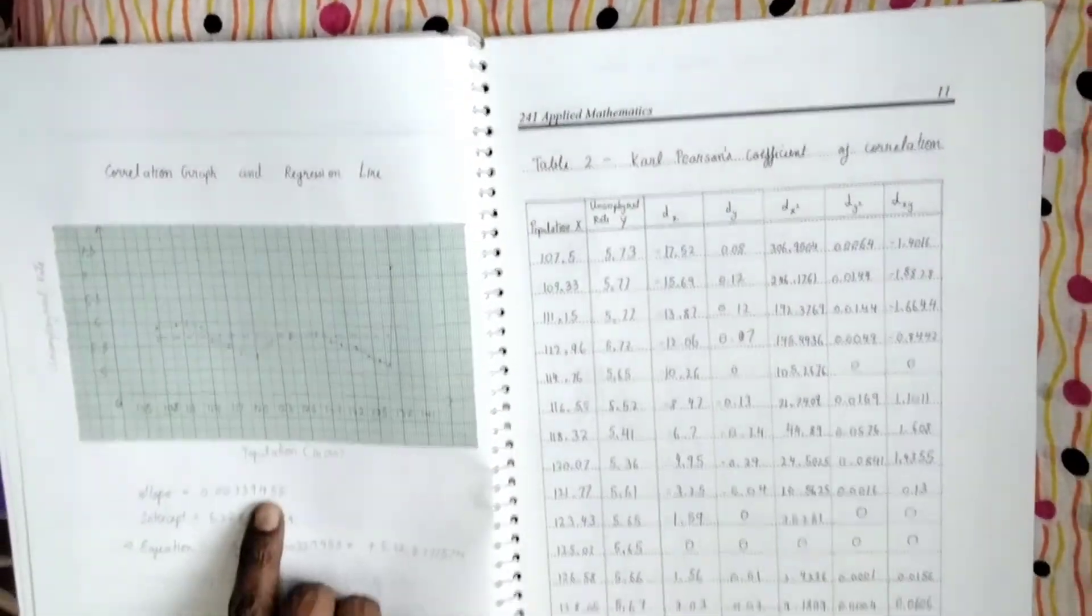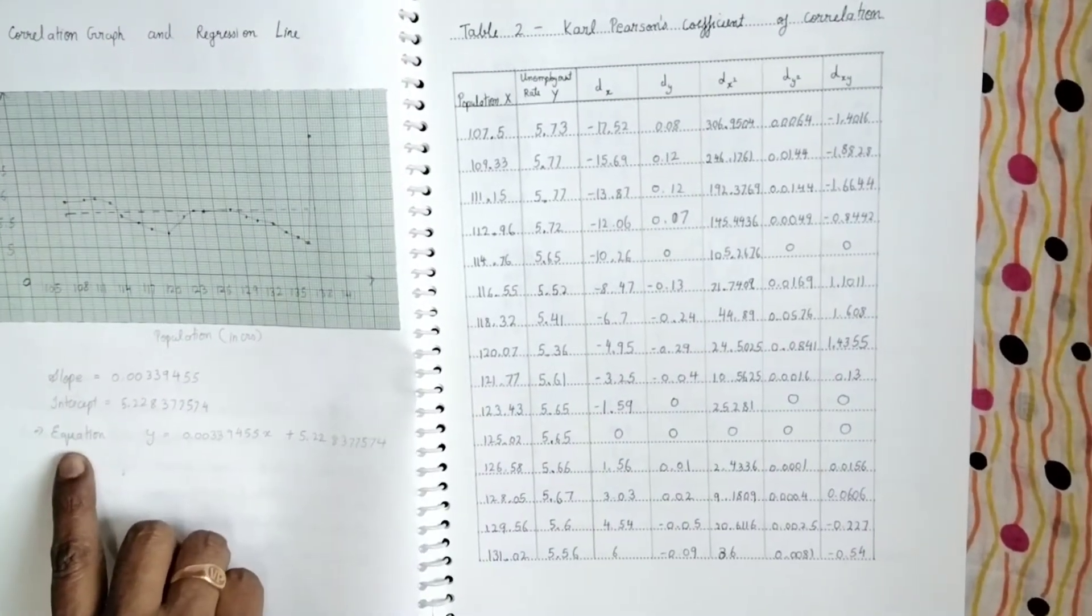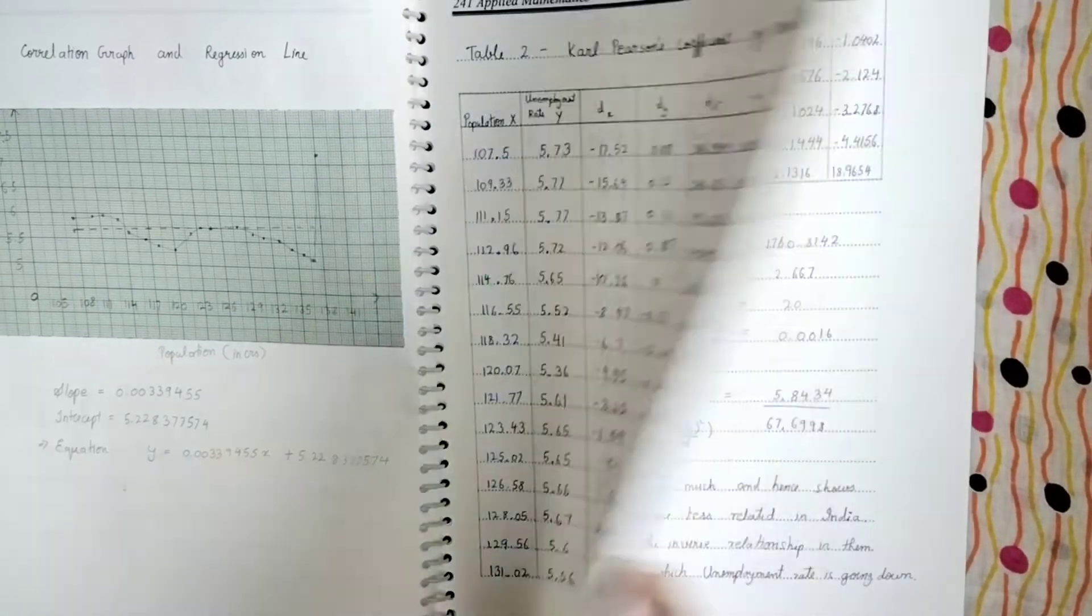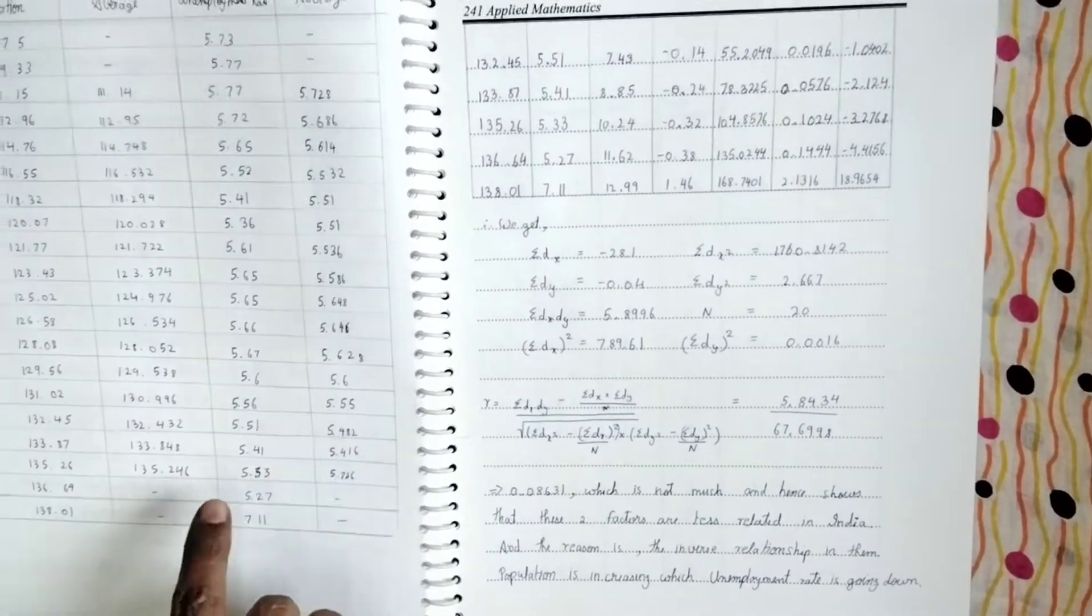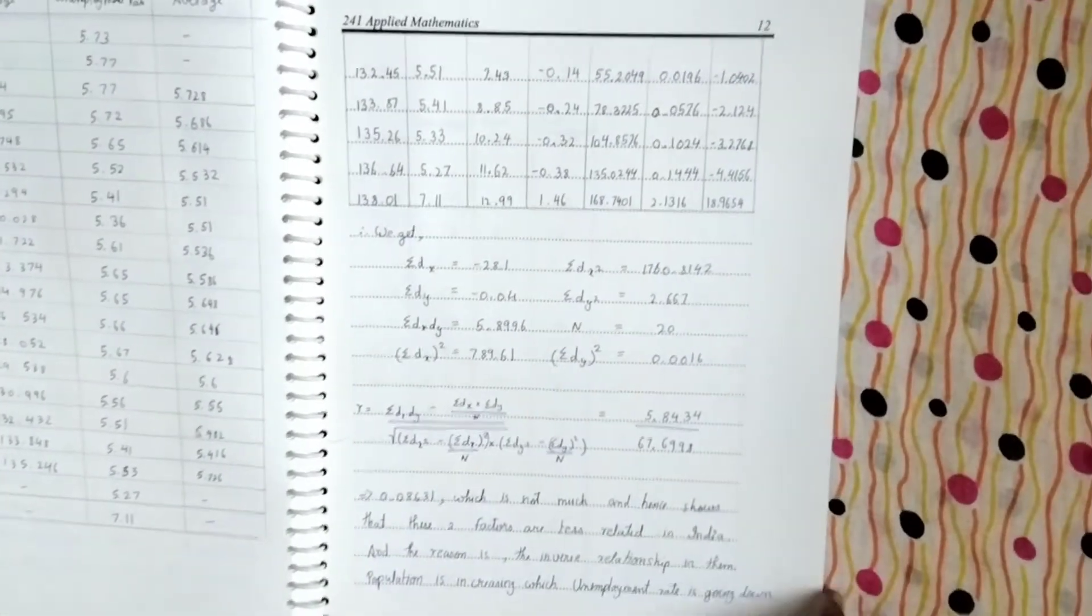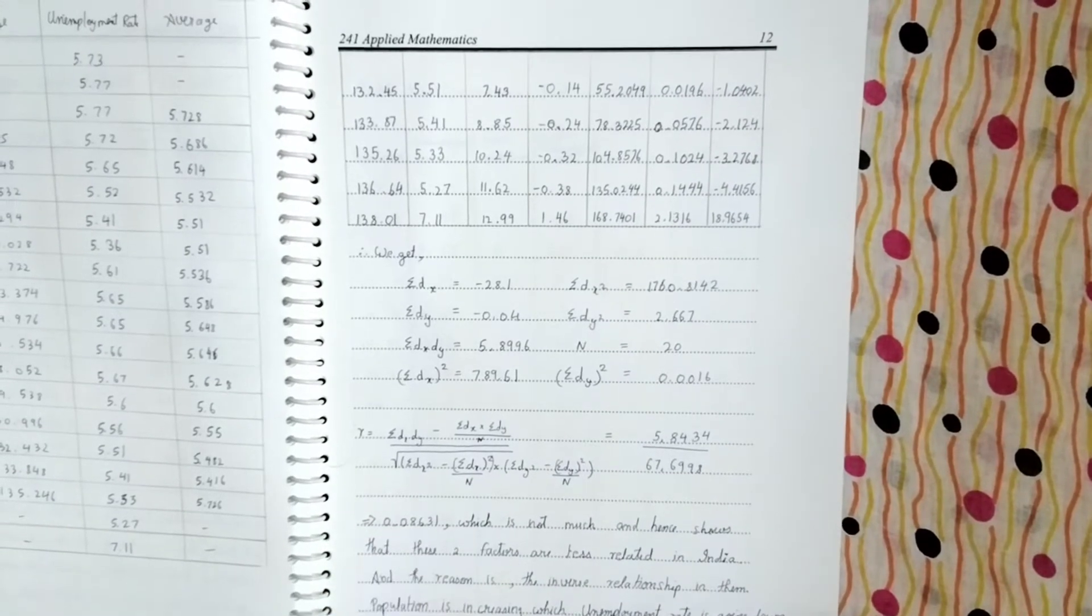And then on the next line is he's calculated the Carl Pearson's correlation coefficient and with that he's actually found what is the equation. This equation he's used for prediction also. And this is the five-year moving average table that he's done. This is the correlation coefficient formula which is calculated. It comes to be 0.08631 when he's done.